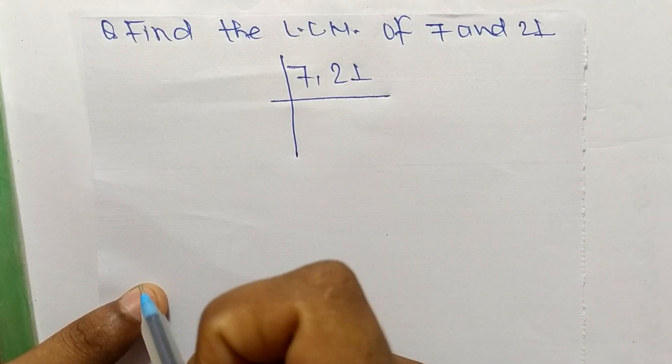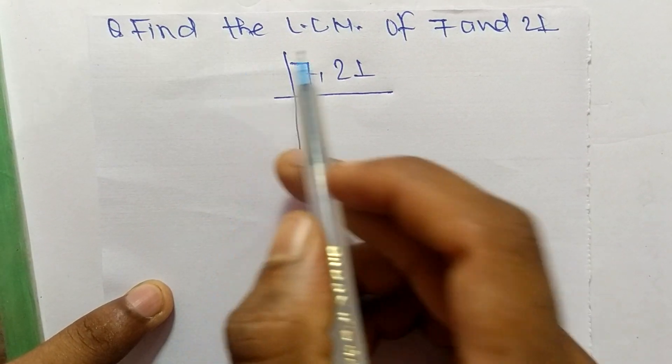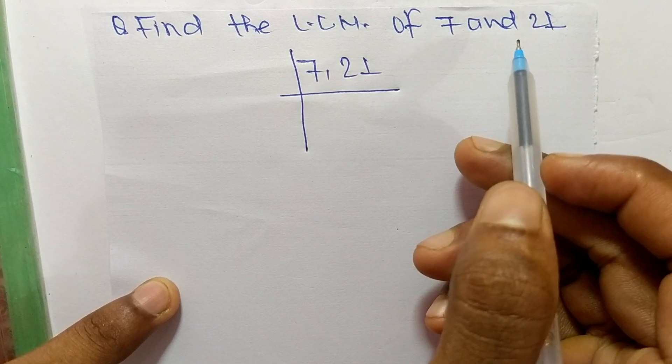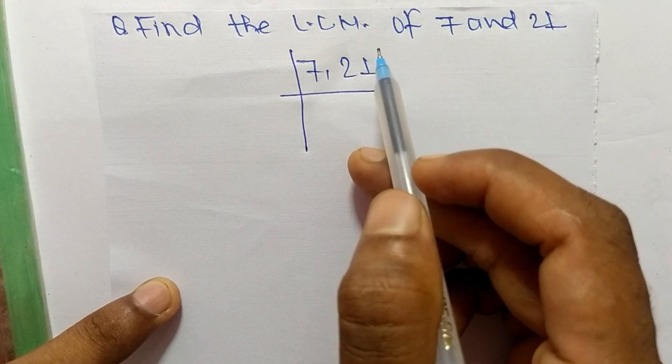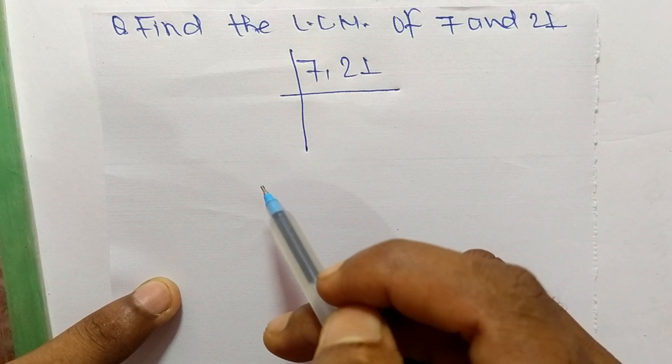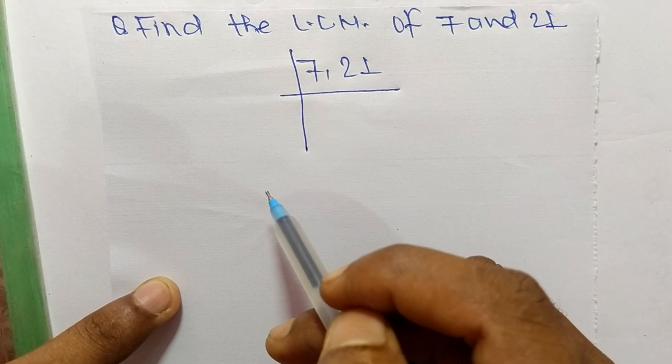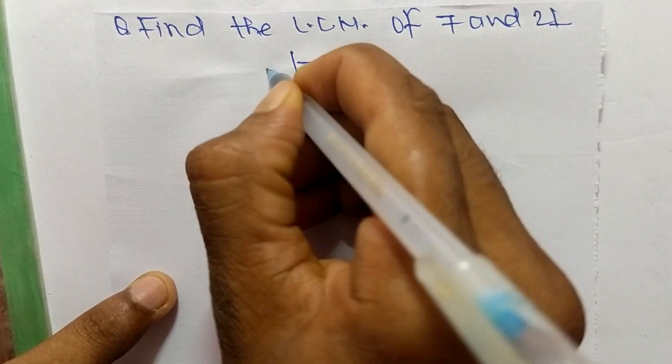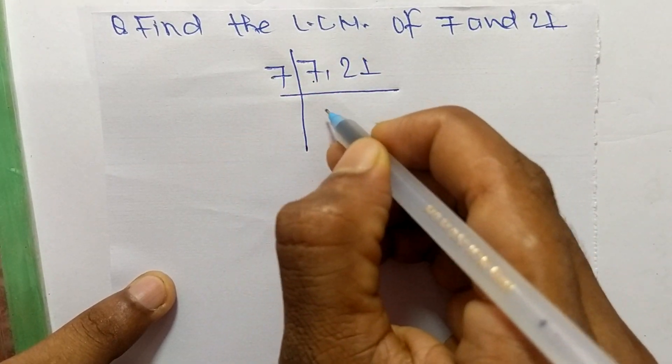Today in this video we shall learn to find the LCM of 7 and 21. To find LCM, first we have to choose the lowest number which can exactly divide both numbers. So the number is 7.